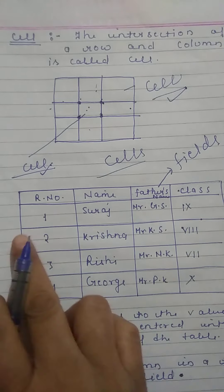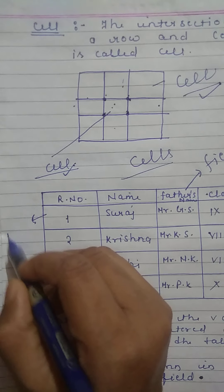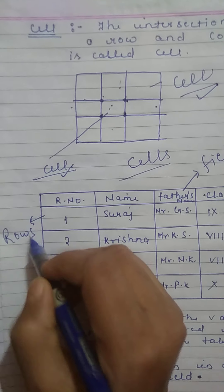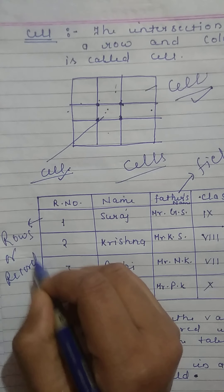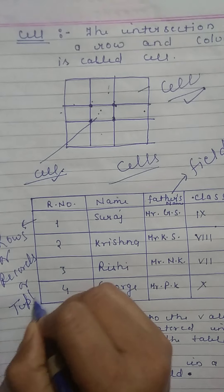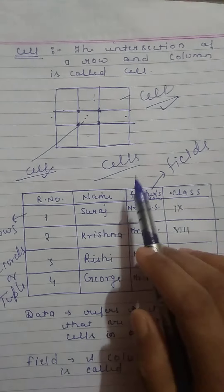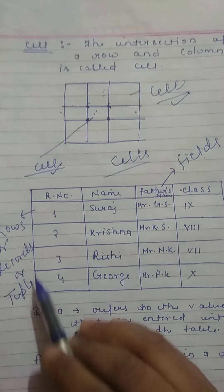And these are the rows and in the term of database rows are called records or tuple. It means columns are called fields and rows are called records or tuple.